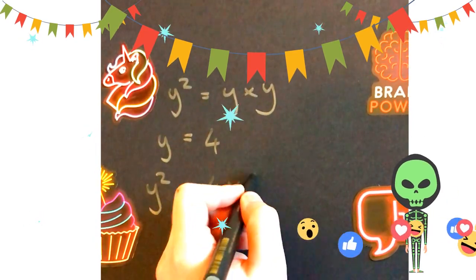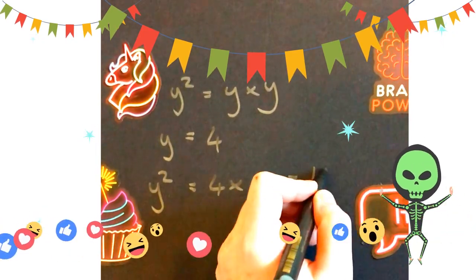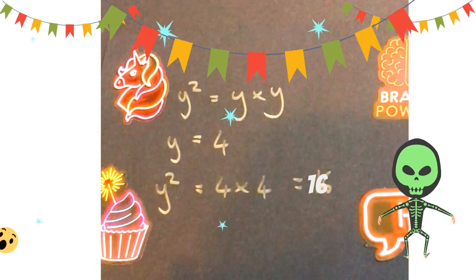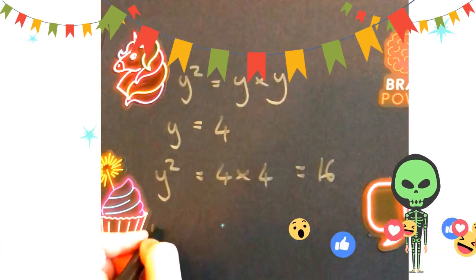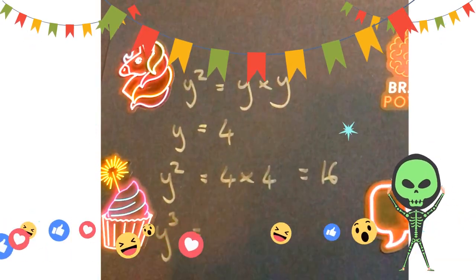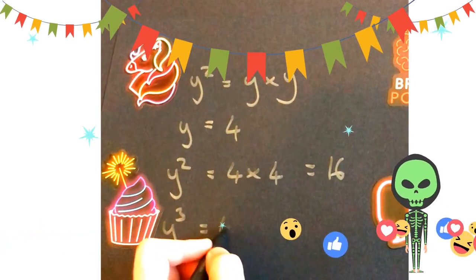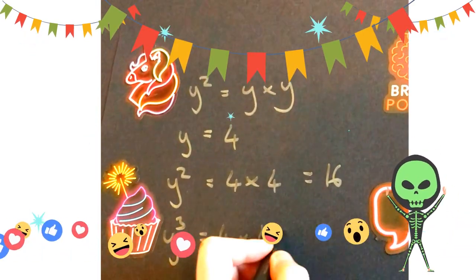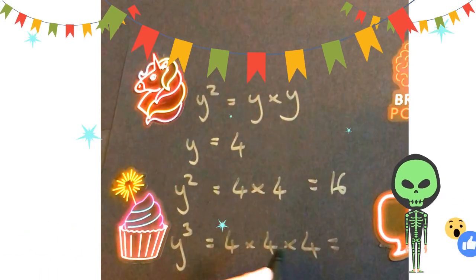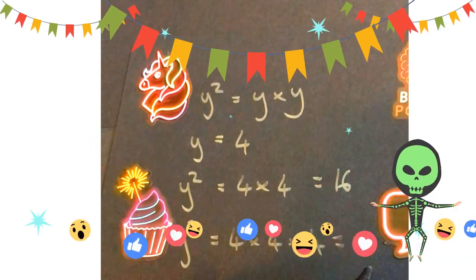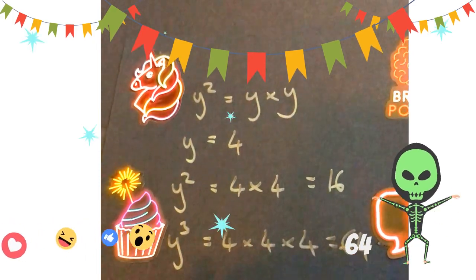Or if I wanted to do y cubed, then that would be times by itself three times, which is the same as saying 4 times by 4 times by 4. And 4 times 4 is 16, 16 times 4 is 64.